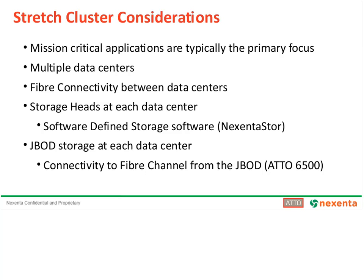The fiber connection can be a dark fiber connection, an existing fiber connection between data centers, or even a new run of fiber for smaller geographical distances. There are storage heads running Nexenta Store software with a MetroHA plug-in at each data center site, and JBOD storage connected to the storage heads at each site. JBODs are not necessarily fiber channel but SAS connected. Atto's 6500 storage controller provides fiber channel connection to JBOD storage to enable the long-distance data transfers between data centers. Fiber channel switches may also be required to enable a fully redundant, no-single-point-of-failure configuration.